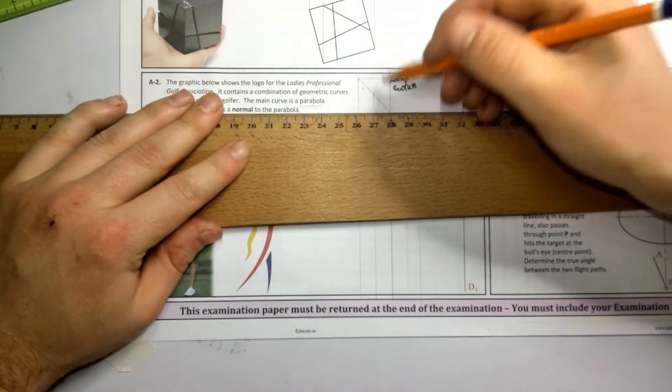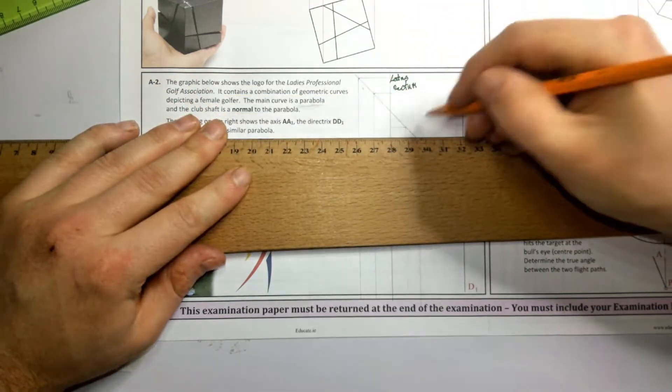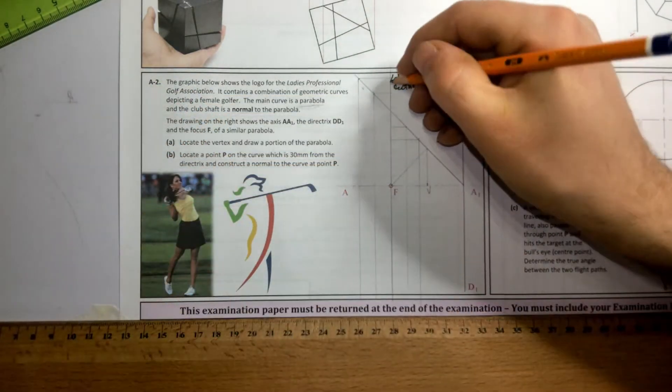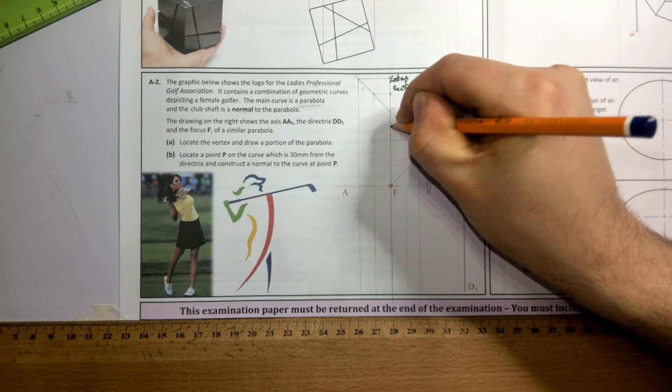Now, take your T-square and draw lines parallel to the major axis back until they hit the latus rectum. These are the points we're going to use.